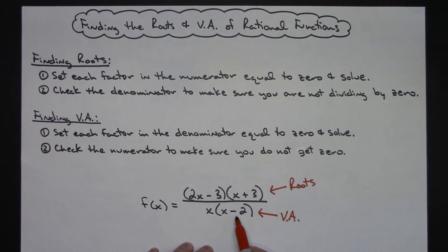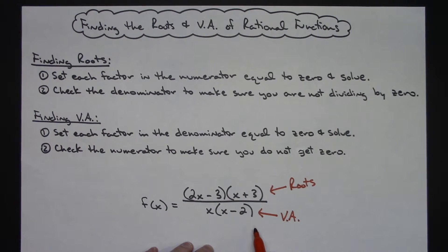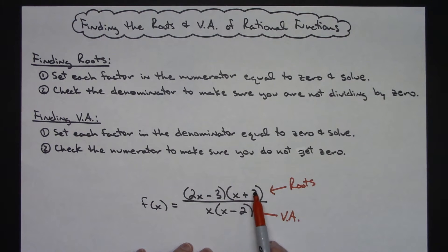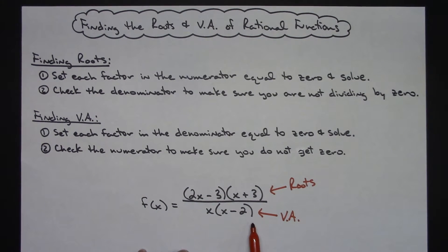Same thing — if you take one of your factors in your denominator, set it equal to zero, get whatever that is, plug it into the numerator and get a zero, then that would not be a vertical asymptote. So roots are located in the numerator of rational functions; vertical asymptotes are located in the denominator.